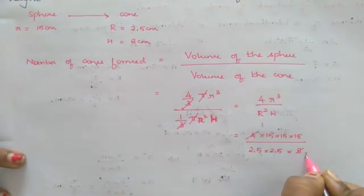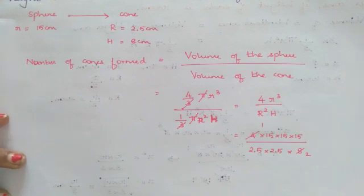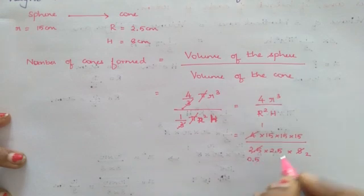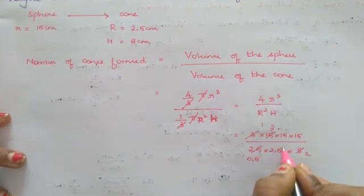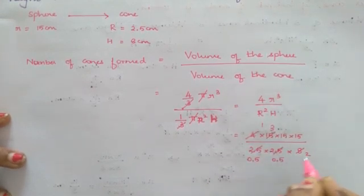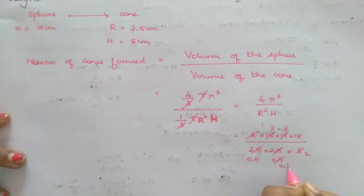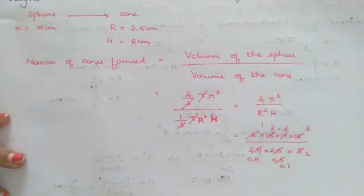Now let's cancel. 4, 2 times 8. Right. Now we are going to cancel by using the 5 tables. 5 into 0.5, 5 3 times. Again 5 into 0.5, 5 3 times. Now let's cancel. 5 into 0.5 times. And this is 5 3s are 15.